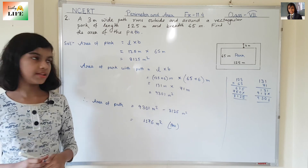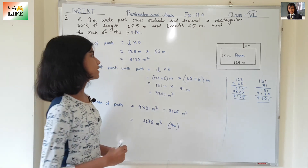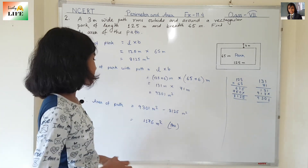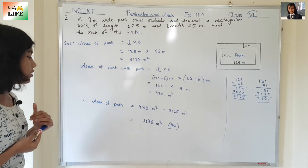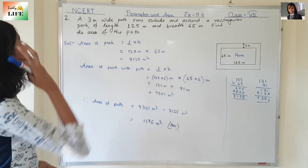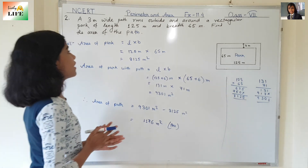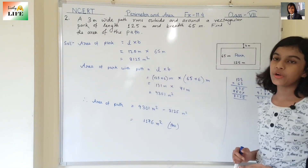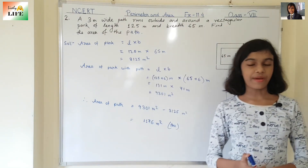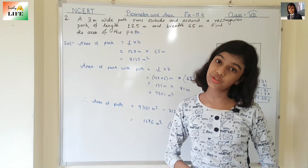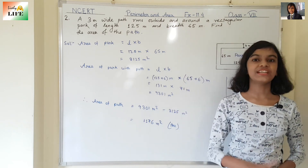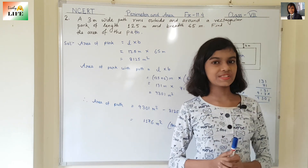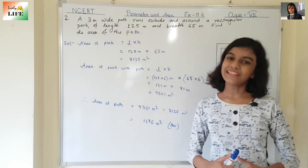This is the answer. We have found out the area of the path — it is 1,176 meter square. With this, we have completed question number 2 of exercise 11.4. In the next video, I am going to be back with question number 3. If you like this video, click on the like button, and to stay with me, please click on the subscribe button. Thank you! See you next time.